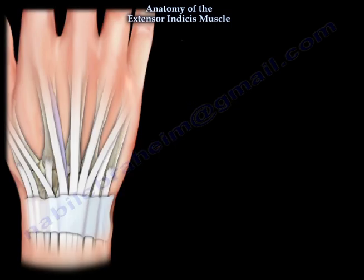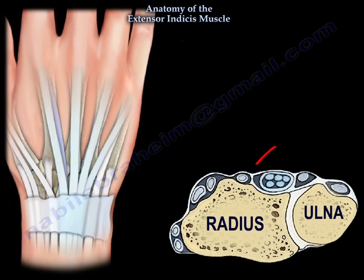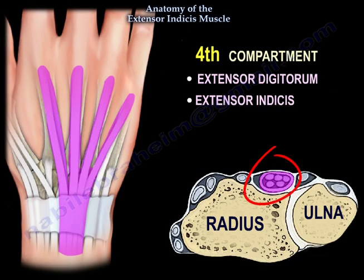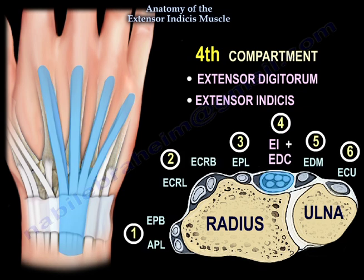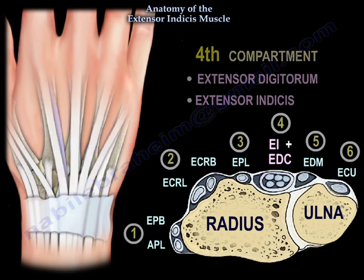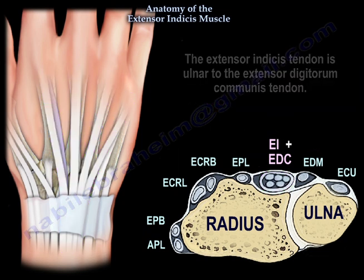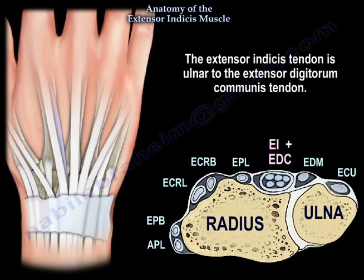As you can see here in the cross section, this muscle is present in the fourth dorsal compartment of the wrist, in addition to the extensor digitorum communis. The extensor indicis tendon is ulnar to the extensor digitorum communis tendon.